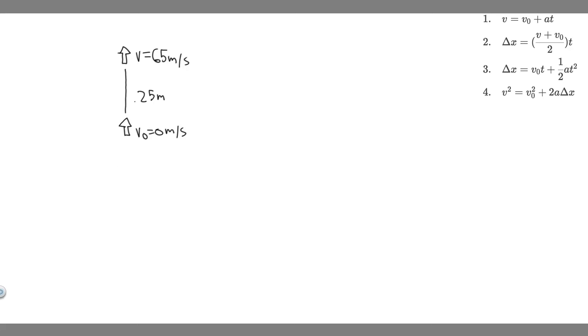In this problem, we're told a firework shell is accelerated from rest to a velocity of 65 meters per second over a distance of 0.25 meters. Part A asks how long did the acceleration last, and Part B asks us to calculate the acceleration.